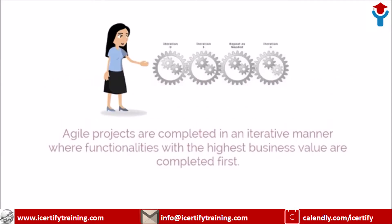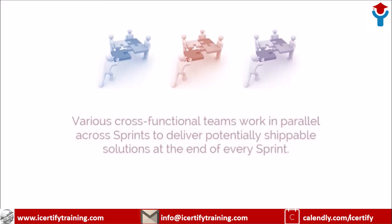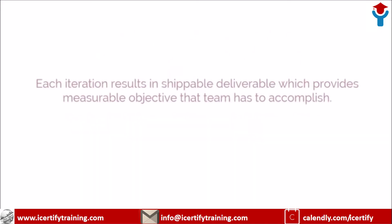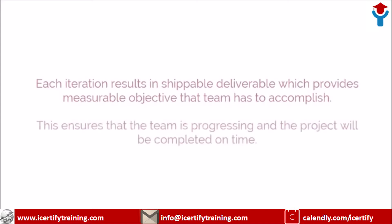Agile projects are completed in an iterative manner, where the functionalities with the highest business value are completed first. Various cross-functional teams work in parallel across sprints to deliver potentially shippable solutions at the end of every sprint. Each iteration results in a shippable deliverable, which provides a measurable objective that the team has to accomplish. This ensures that the team is progressing and the project will be completed on time.